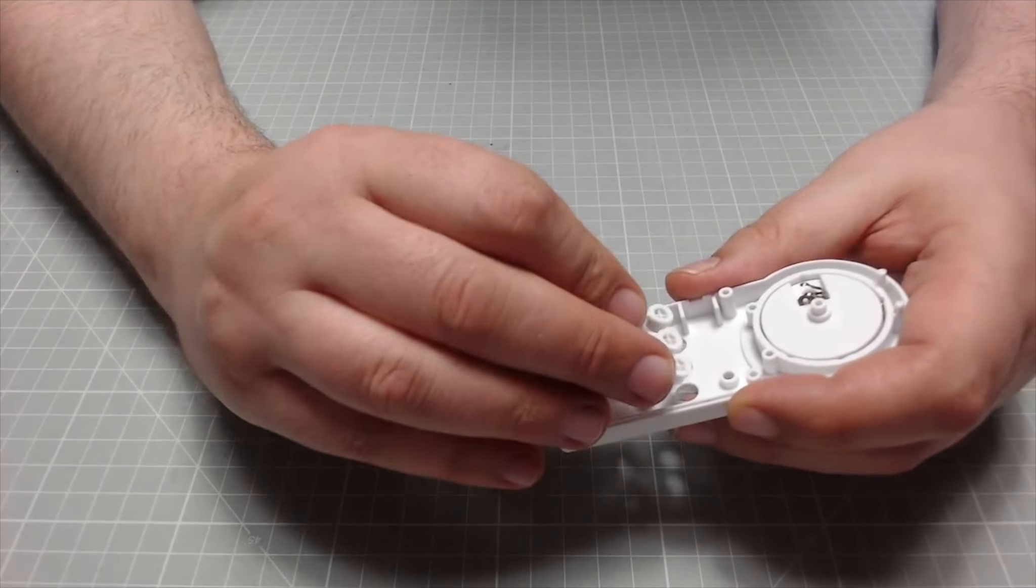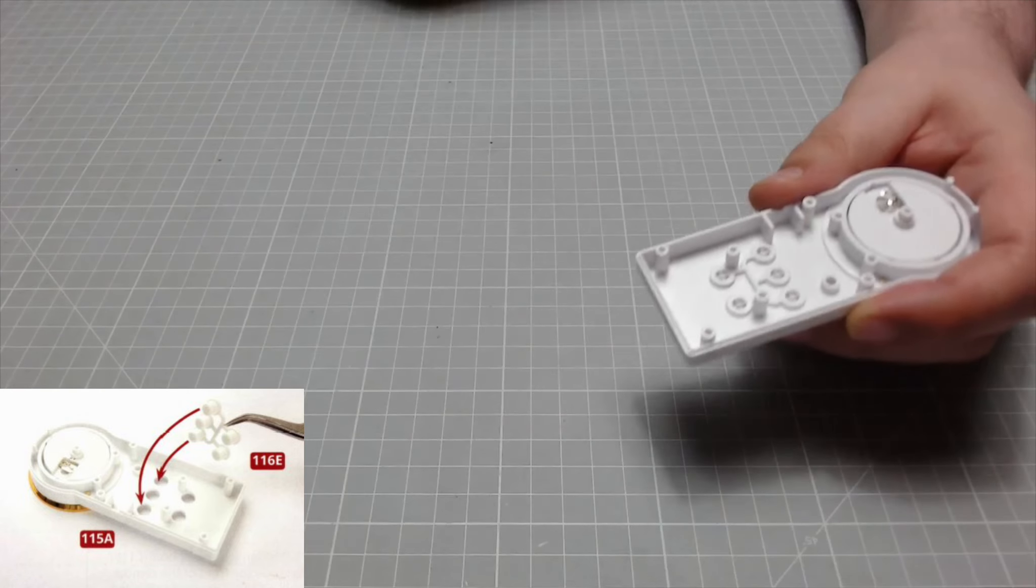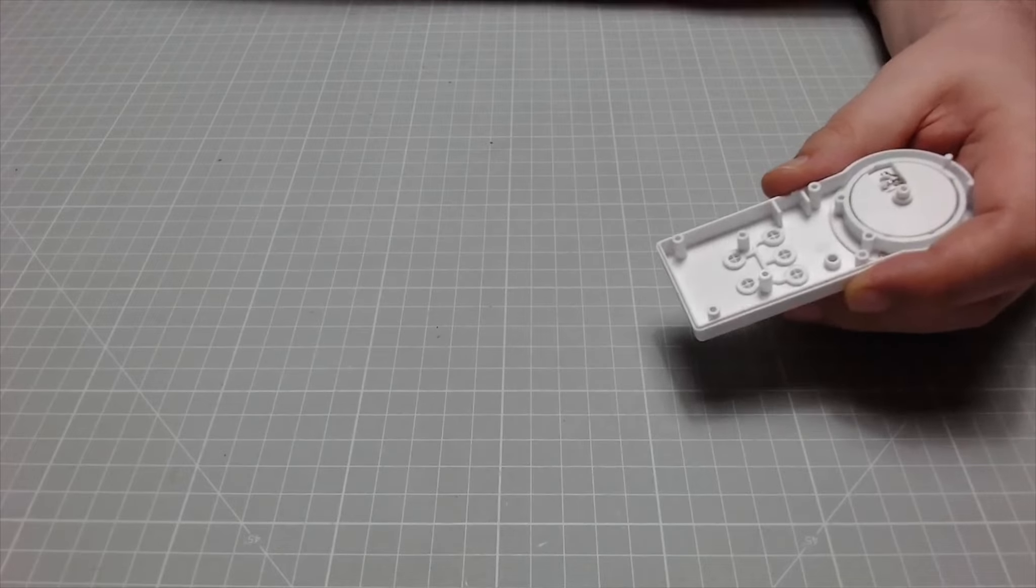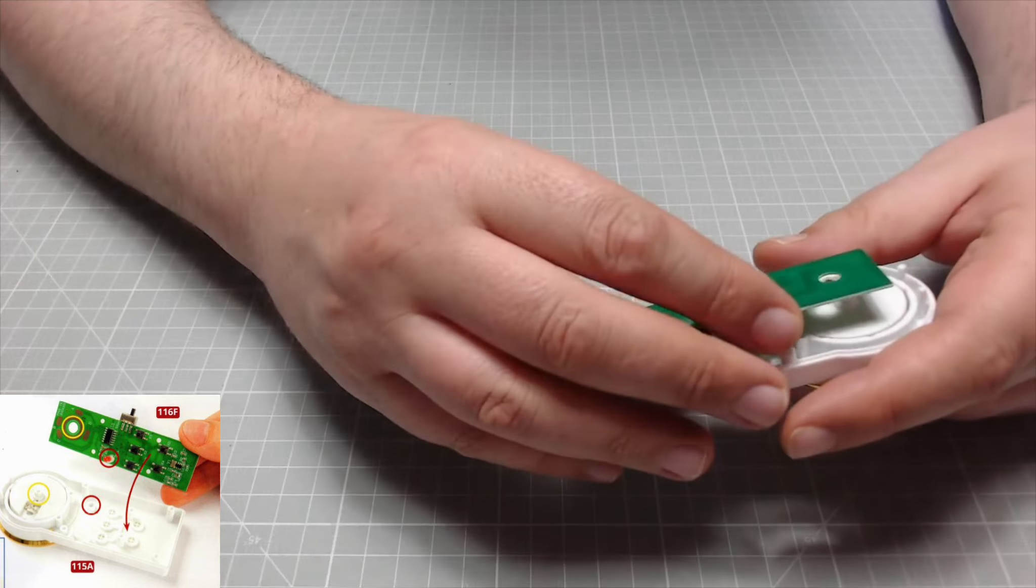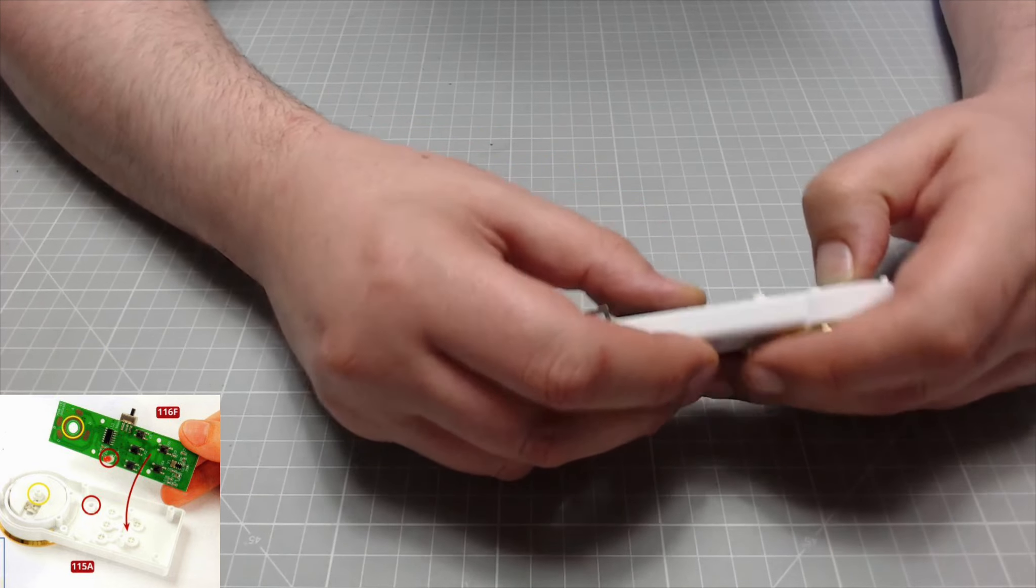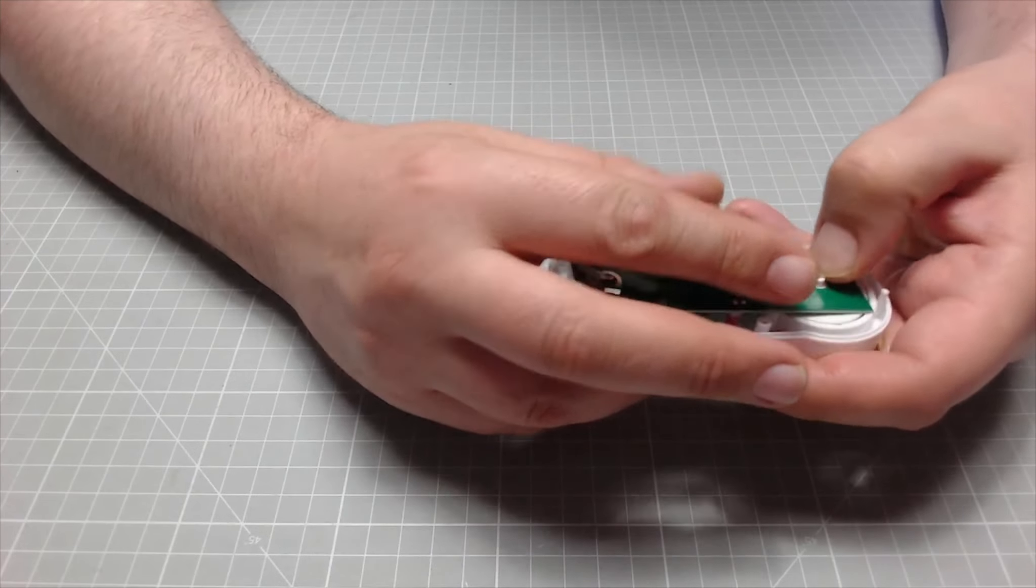Just like this, and these are just going to go in there just like so. That's fairly easy. Okay, next is we need our circuit board and this is just going to sit on just like that. Now that is over that little spring thing.